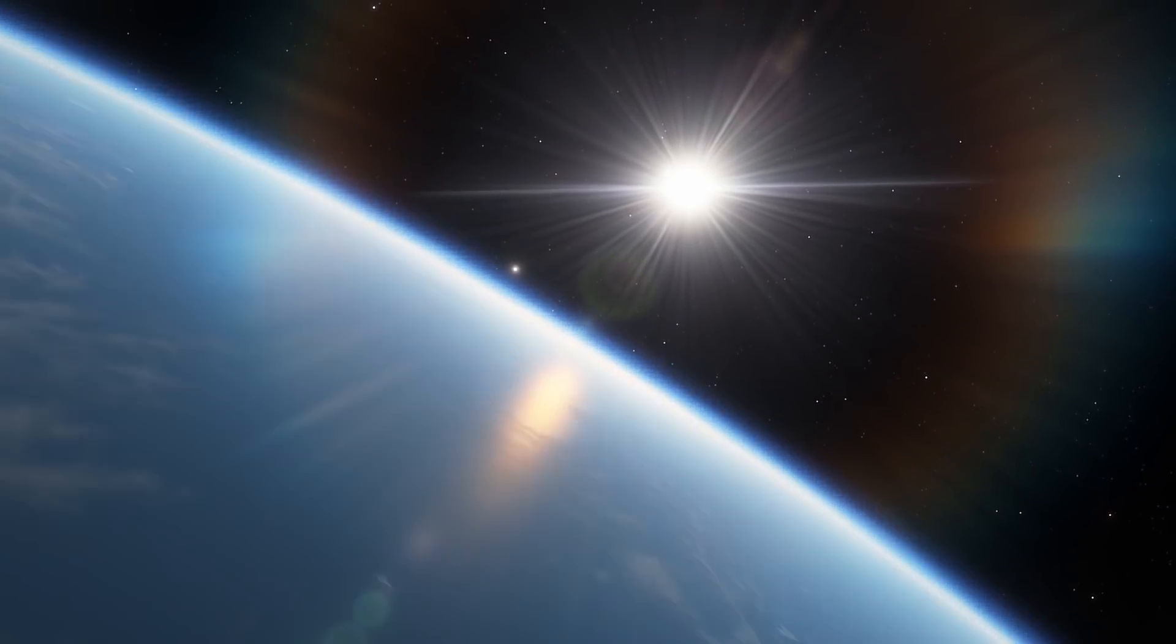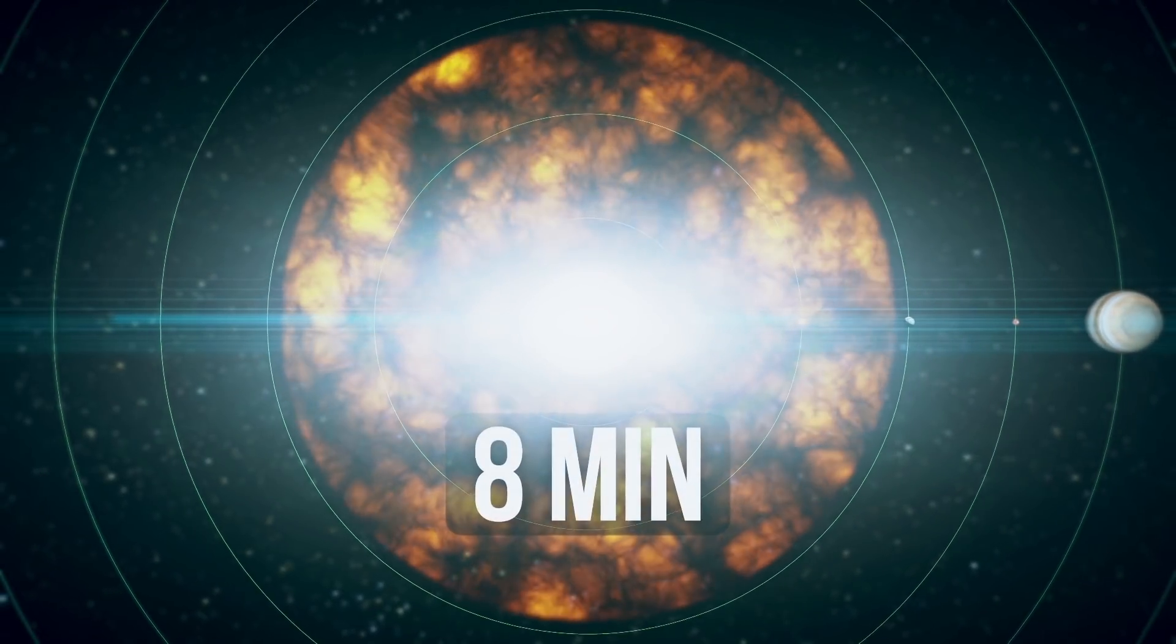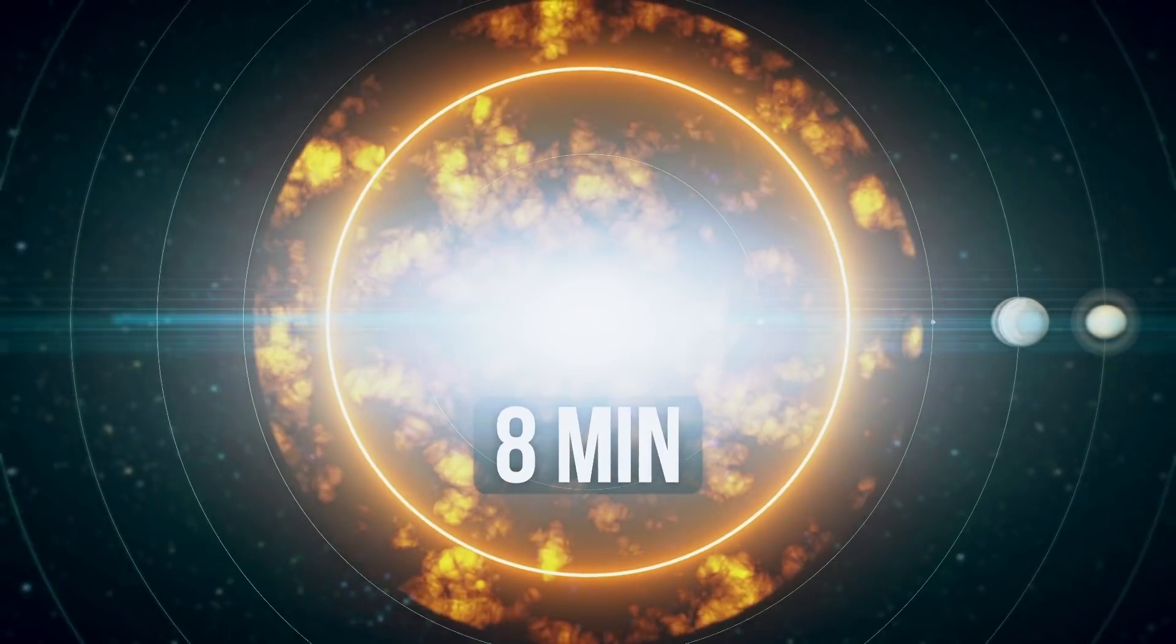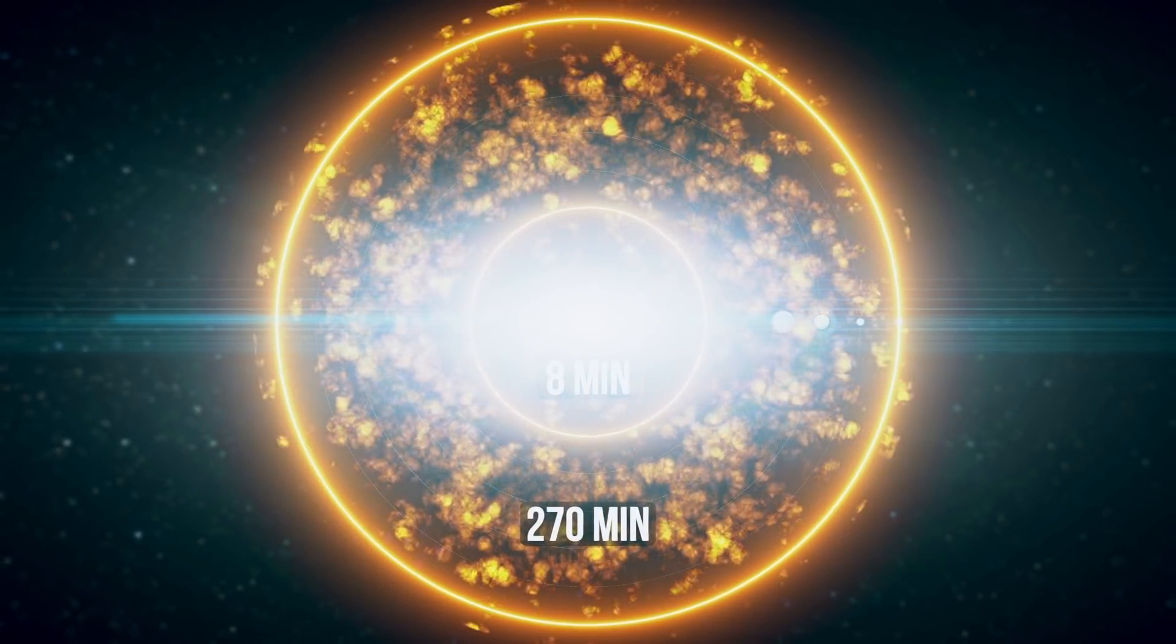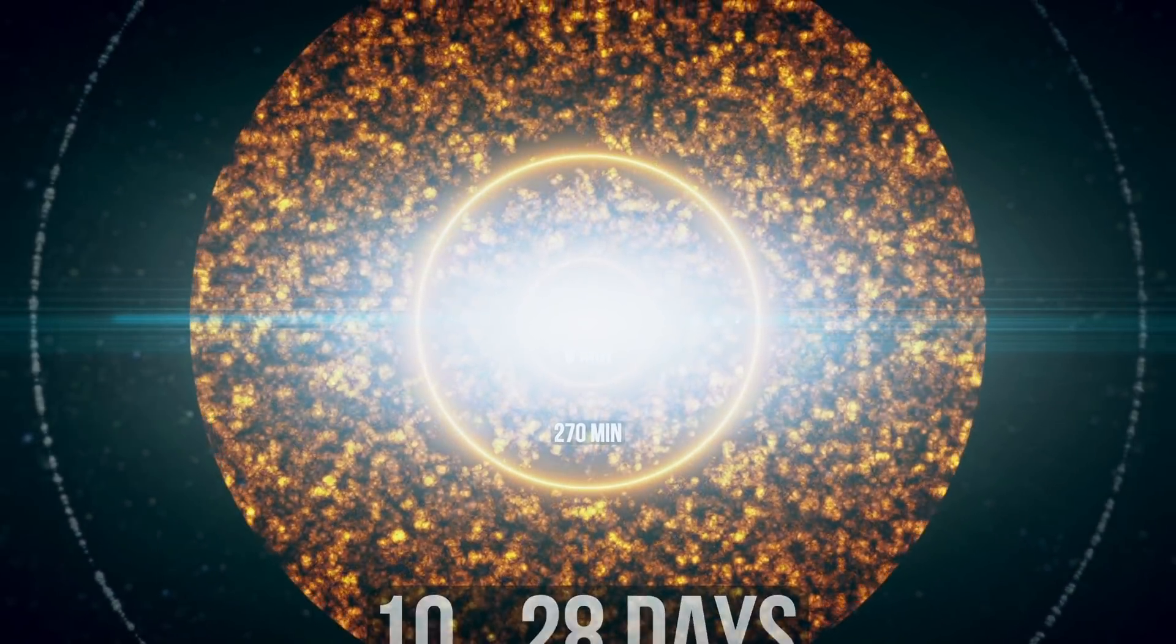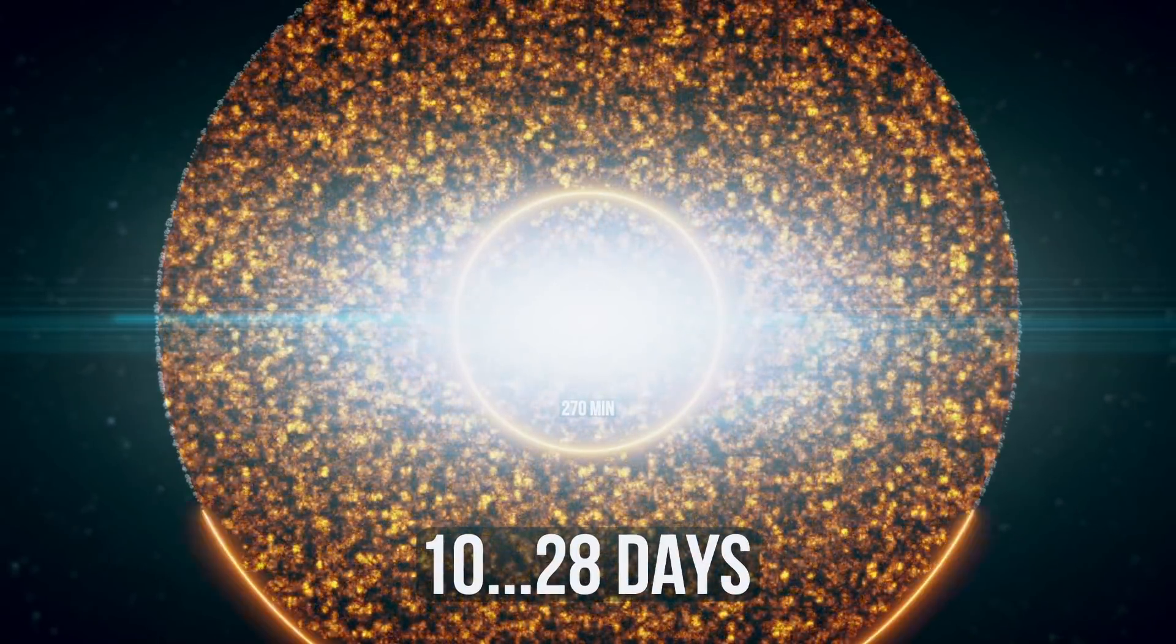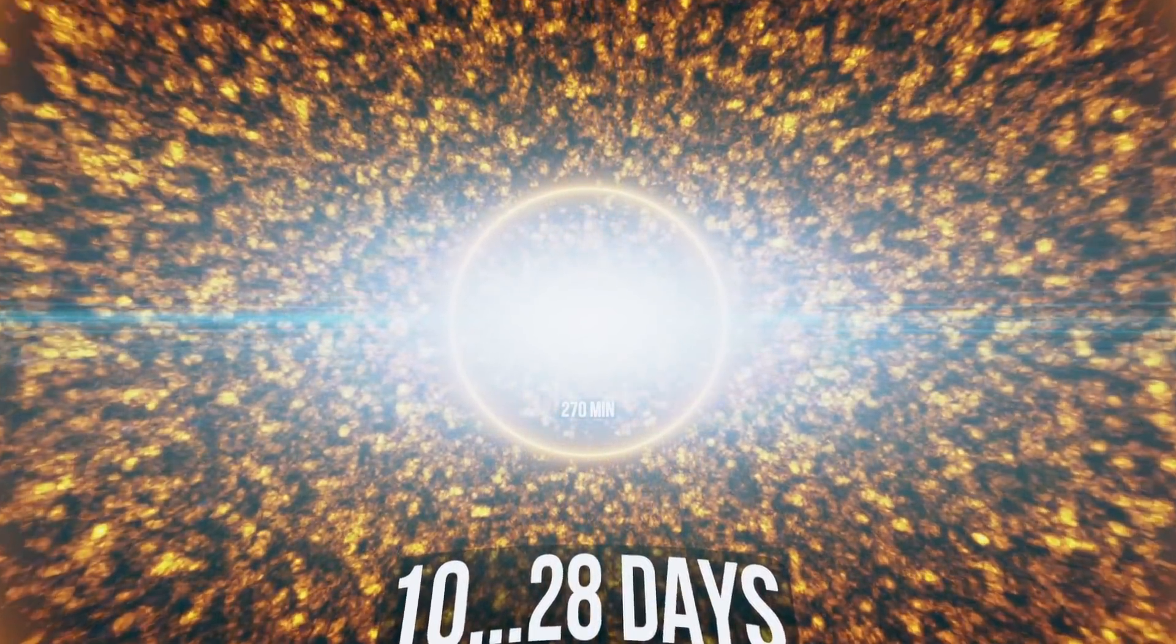For reference, it takes sunlight an average of 8 minutes to reach the Earth and 4 and a half hours to reach Neptune. And it takes sunlight between 10 to 28 days to reach the Oort cloud. That's mighty far.